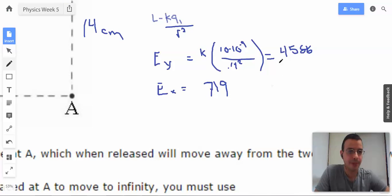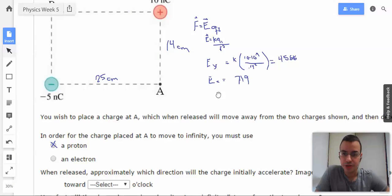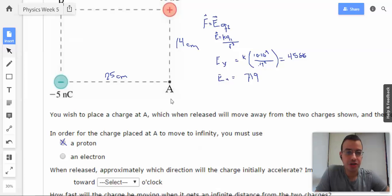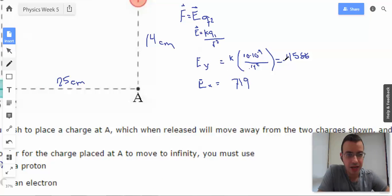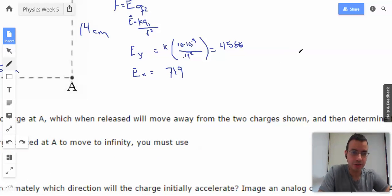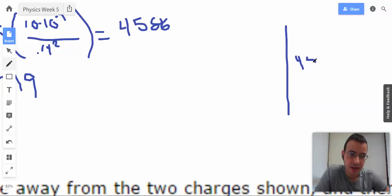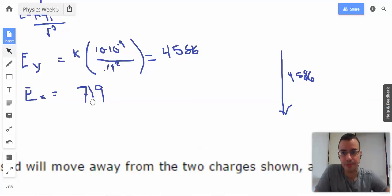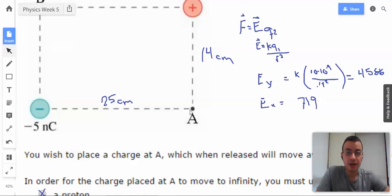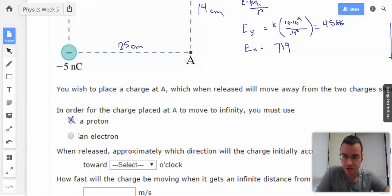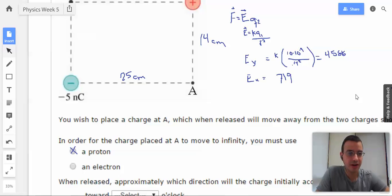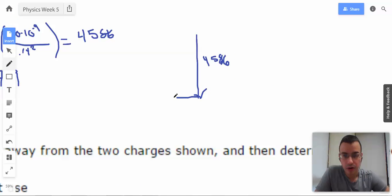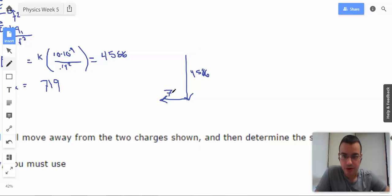At least it looks like I was right about the y direction having significantly more influence. So now I need to find direction. So the positive charge is going to push it down, so I'm going to call this negative 4586. And the positive charge here is going to be pulled towards the negative 5 so it's going to be to the left, 719.